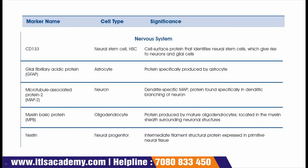The next marker is glial fibrillary acidic protein, in short known as GFAP. These markers are most of the time written in their short form, which is always preferred over the long form or full name. This GFAP marker is present in astrocytes. The significance is that it is a protein specifically produced by astrocytes.